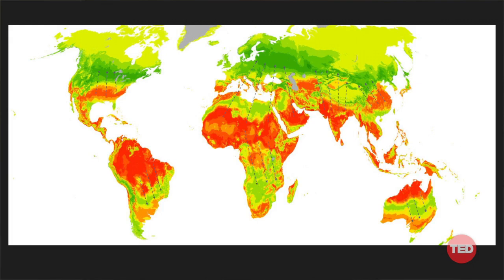Think about what I showed you: most of the human population lives in places that are basically turning red. The places that are green right now are places that are depopulating — fewer and fewer people as a result of old age, mortality, and low fertility rates. The rich countries — the United States, Canada, Europe, Russia, Japan — would actually be declining in population were it not for immigration.